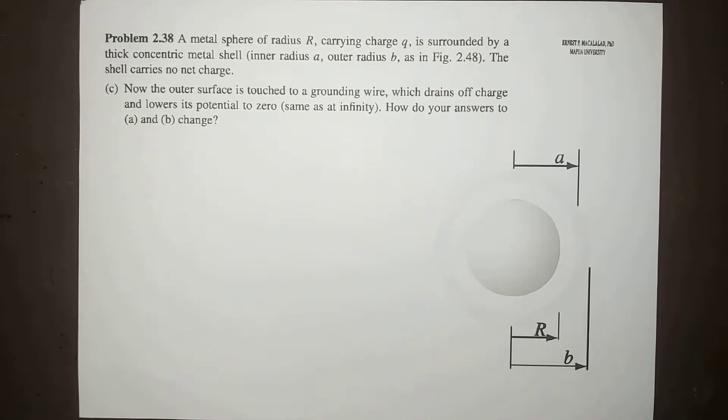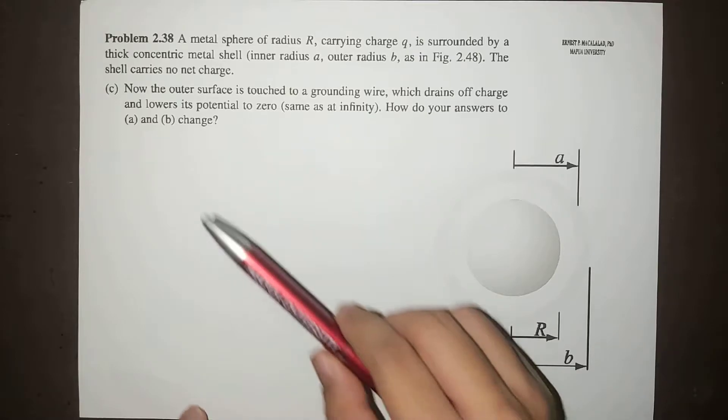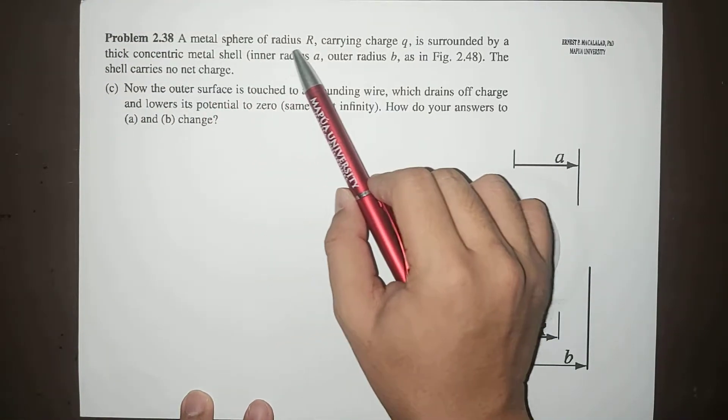What's up guys, it's me Sir Ernest, and today we're going to solve problem 2.38 letter C of Griffiths' fourth edition. So this is the last item for problem 2.38, and the problem reads: a metal sphere of radius R